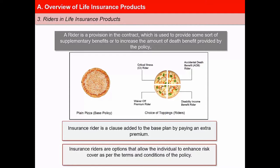An insurance rider is a clause added to the base plan by paying an extra premium. Insurance riders are options that allow the individual to enhance risk cover as per the terms and conditions of the policy. Benefits like disability cover, accident cover, and critical illness cover can be provided as additional benefits in a standard life insurance contract.